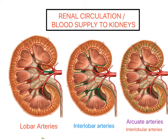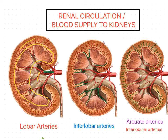Before starting the renal circulation, we are going to brush up the parts of the kidney structure. In this coronal section, with our naked eye we can differentiate the regions: the outer region is called the cortex, which is reddish brown in color, and the inner one is called the medulla, which is pale in color. The third area is the renal sinus.